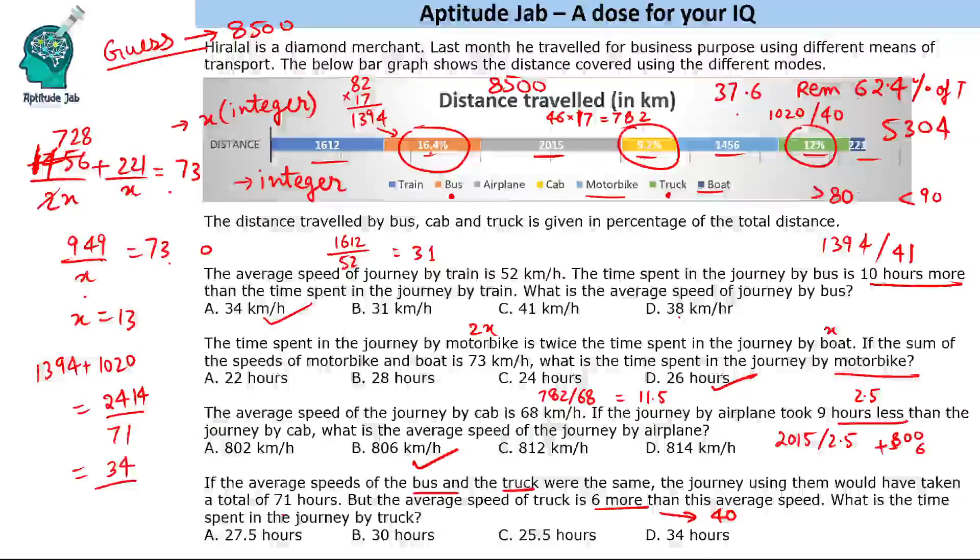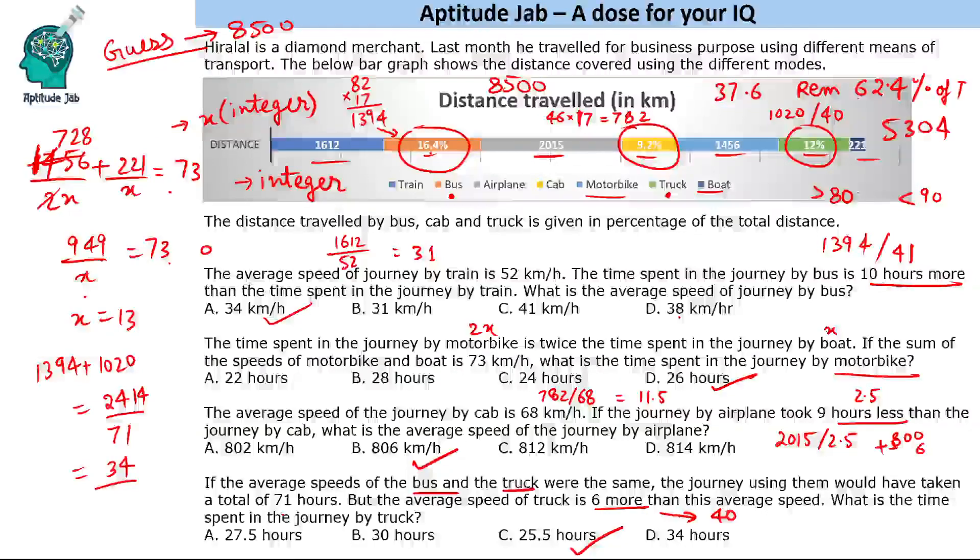So time spent in the journey by truck, truck is covering 1020 kilometers divided by 40, so 102 divided by 4, that is 25.5 hours. So very heavy calculation, heavy set, but we saw some ways to do calculations easy. That was more important, that was the main learning in this set. So this is the solution and the answers to the questions.